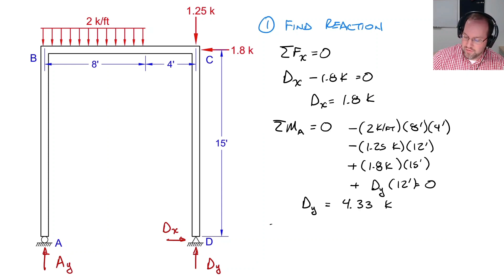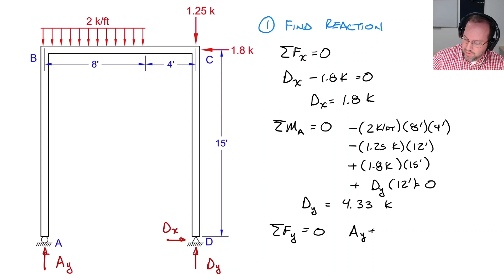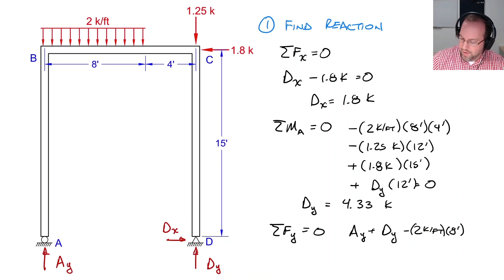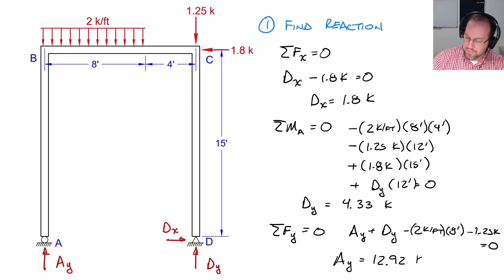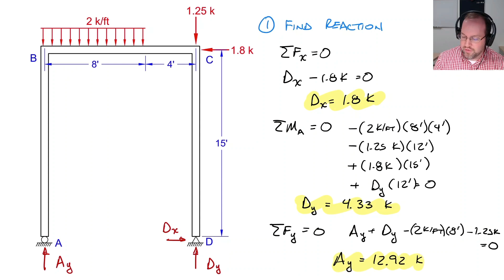Finally, using the sum of forces in the y direction: A_y plus D_y minus 2 kips per foot times 8 feet minus 1.25 kips equals zero. Therefore A_y equals 12.92 kips. Given these reaction forces, we can now find the internal forces for each of the members — the columns and the beam — separately.